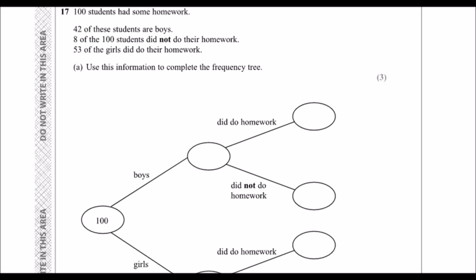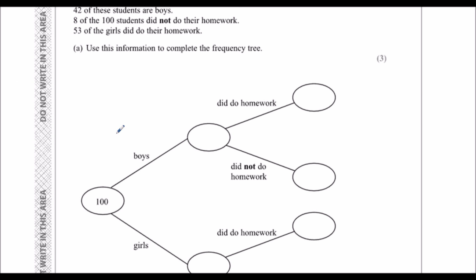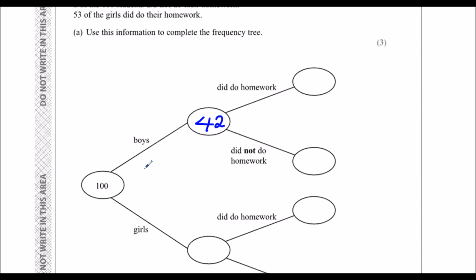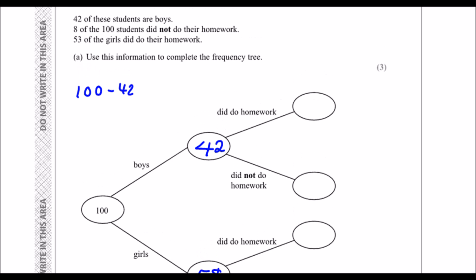Question 17: a hundred students had some homework, 42 of these students are boys. I'm going to fill in the first bit straight away - there's a hundred students, 42 are boys. How many girls are there? If there's 42 boys, there's a hundred minus 42 girls, which is 58. So we've got 58 girls.